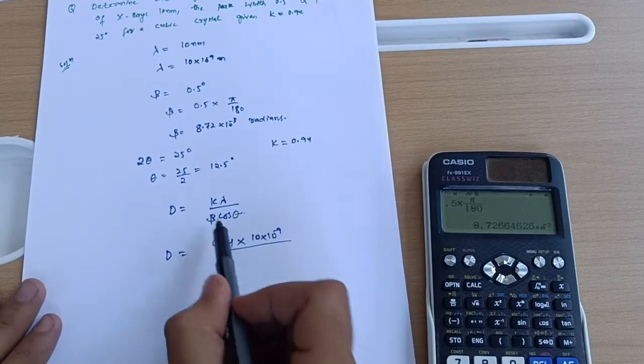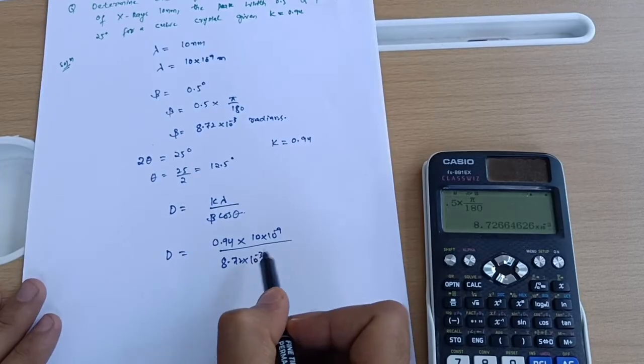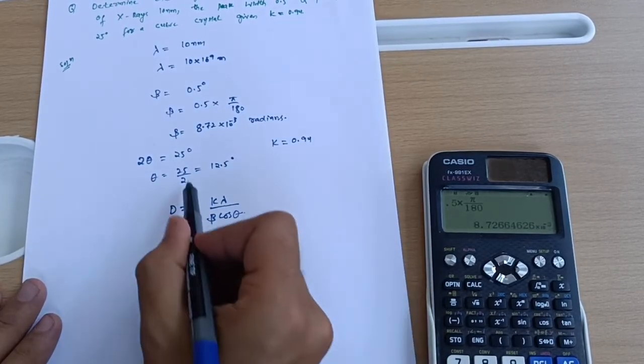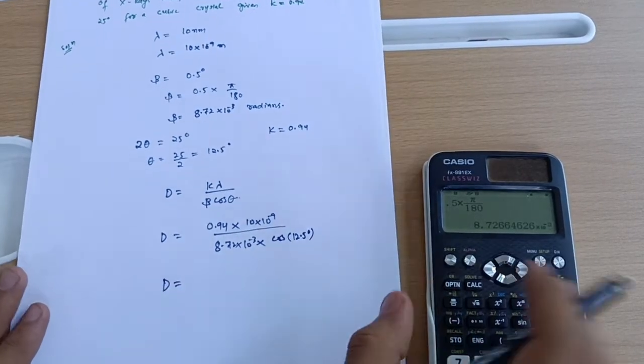Then divided by beta, which is 8.72 × 10^-3, multiplied by cos θ. Cos θ means 12.5 degrees, which we have here.